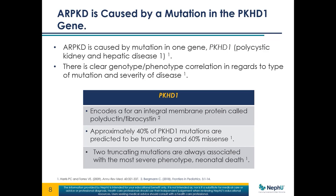There is a very clear genotype-phenotype correlation regarding the severity of the disease. There have been about 700 different mutations identified in PKHD1. Basically there are two types: a mutation can cause a stop codon to occur, producing a truncated and usually non-functional protein — those are the very severe cases. Other mutations just change the amino acid, altering the function of the protein but not completely obliterating it — those are called missense mutations.